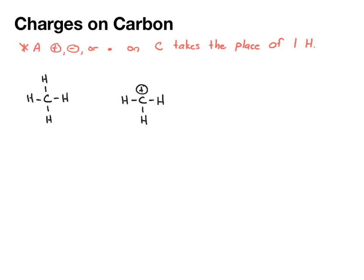If that carbon has a negative charge, it's also going to have one less hydrogen, and it has a lone pair. So a couple things to keep in mind is that if you see a negative on a carbon, it has a lone pair.